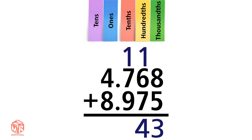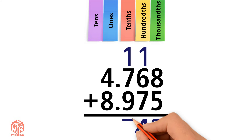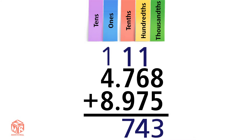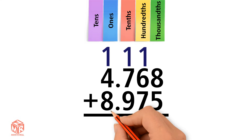Now we add the tenths. 1 plus 7 plus 9 equals 17. 17 is greater than 9, so we regroup. We're left with a 7 in the tenths column and an extra 1 above the ones column. Bring down the decimal. Now we add the ones.